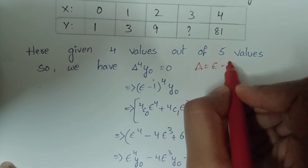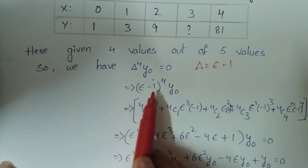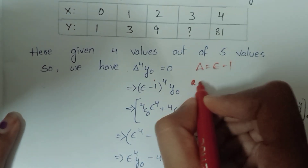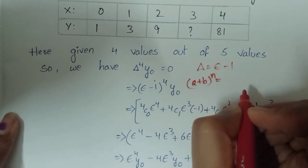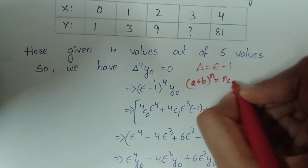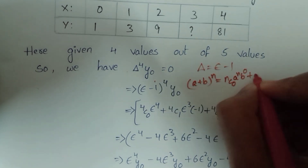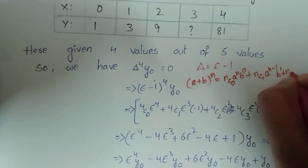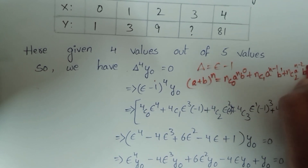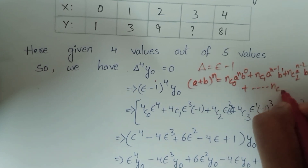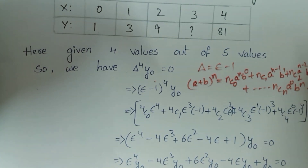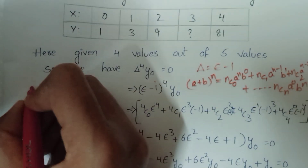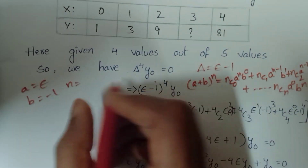Delta value: delta equal to e minus 1, so substituting (delta plus 1) power 4 y-naught equal to 0. Using the (a plus b) whole power n binomial expansion formula: nC0·a^n·b^0 plus nC1·a^(n-1)·b^1 plus nC2·a^(n-2)·b^2 and so on up to nCn·a^0·b^n.